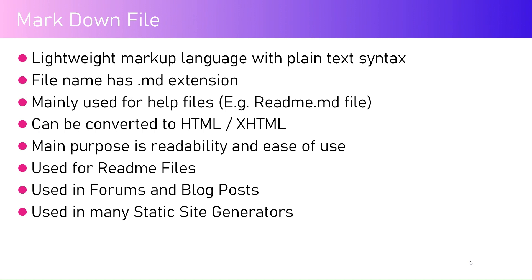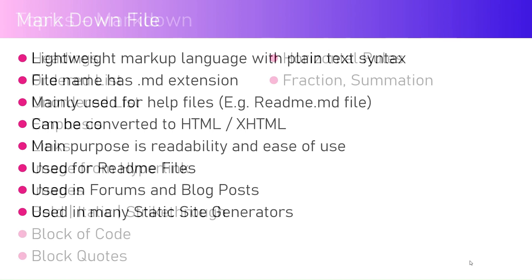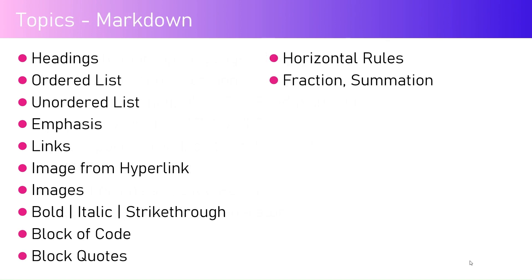The file name has a .md extension, which means markdown. It's mainly used for documenting help files or instructions. In a GitHub repository you may find a file called readme.md — that's a markdown file. The main purpose is readability and ease of use. It's also used in forums, blog posts, and static site generators. A markdown file can contain headings, ordered lists, unordered lists, emphasis, links, images, bold, italic, strikethrough, block code, horizontal rules, fractions, summations, and more.